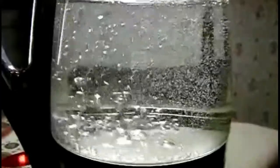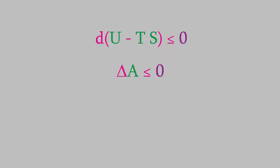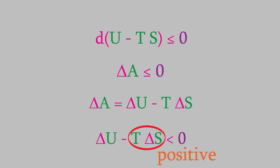Also, notice that based on our definition of the Helmholtz free energy, delta A is equal to this. That means that delta U minus T delta S is less than zero for a spontaneous process. Since the temperature and entropy will both be positive numbers, that means that this term is positive. What does that tell us?